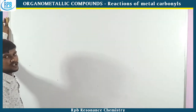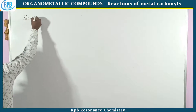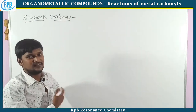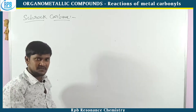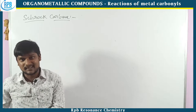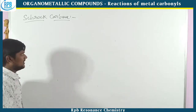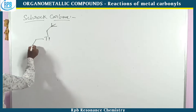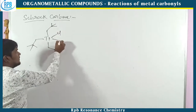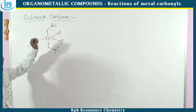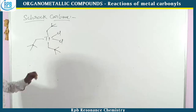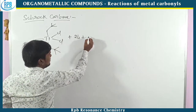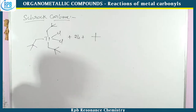Now let's move on to Schrock carbene. After the discovery of Fischer carbene, after ten years it was discovered. The main differentiation between Fischer and Schrock carbene is that in Fischer carbene, the carbene carbon acts as an electrophile, but in Schrock carbene it acts as a nucleophile — that is the major difference. In Schrock carbene synthesis: TiCl4 (early transition metal titanium) with three alkyne groups and two other ligands is treated with two moles of lithium along with neopentyl groups.